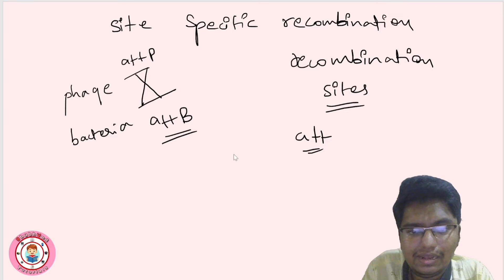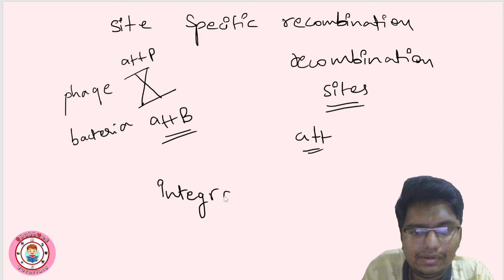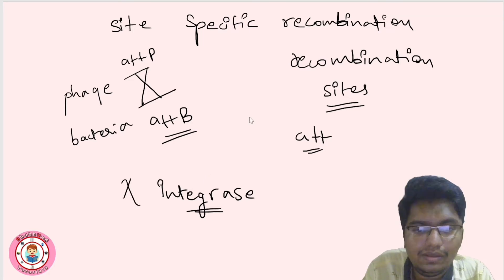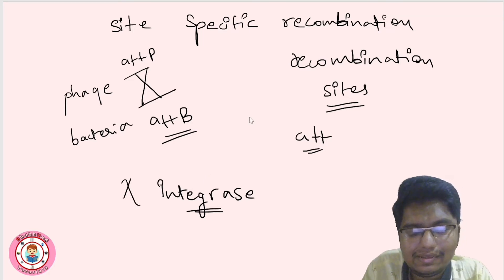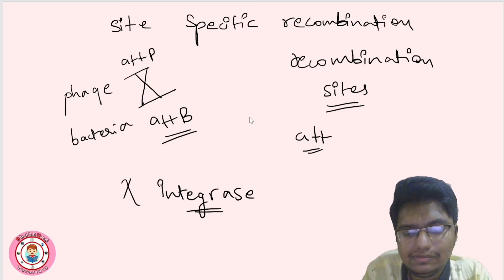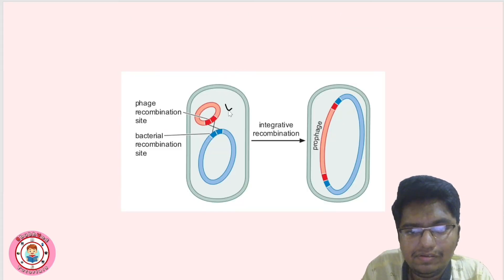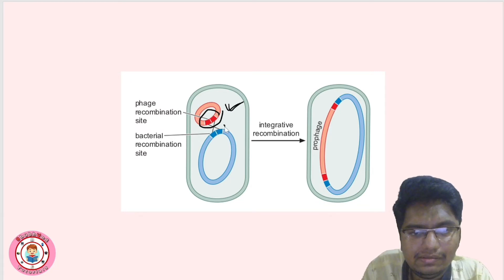The key proteins involved include integrase — specifically lambda integrase — and other accessory factors. Looking at the diagram, the phage recombination site is shown in dark red, and the bacterial site is shown separately. These are known as ATTP and ATTB.